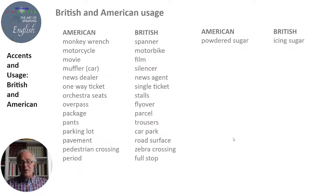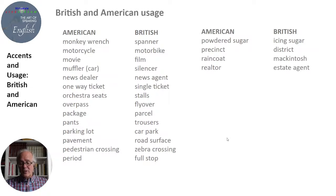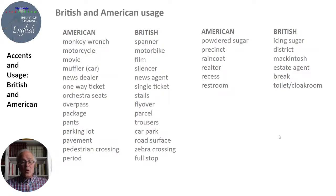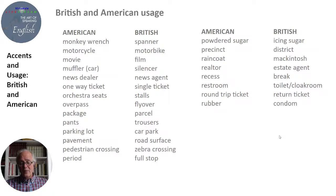Powdered sugar vs. icing sugar. Precinct vs. district. Raincoat vs. mackintosh. Realtor vs. estate agent. Recess vs. break. Restroom vs. toilet or cloakroom. Round-trip ticket vs. return ticket. And notably: rubber in American means eraser, but rubber in British means condom.